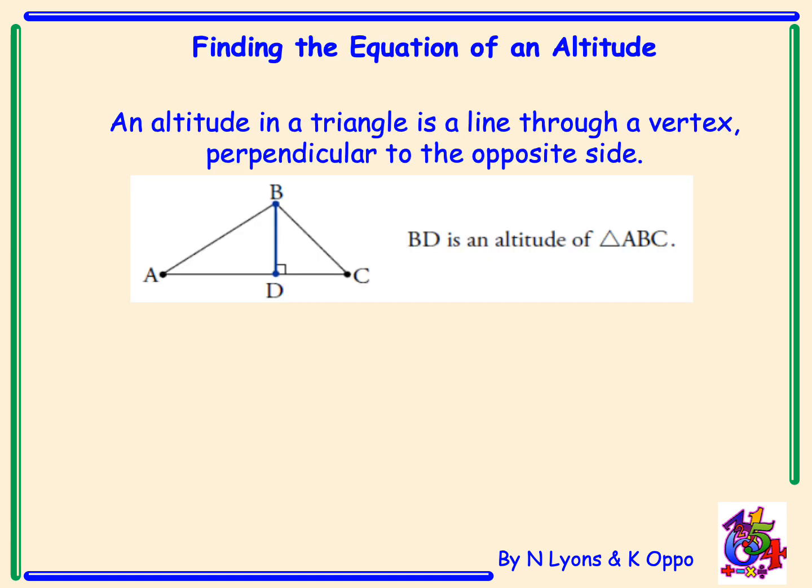An altitude in a triangle is a line through a vertex perpendicular to the opposite side. You may have seen this before in National 5 where we can describe an altitude as the height of a triangle.